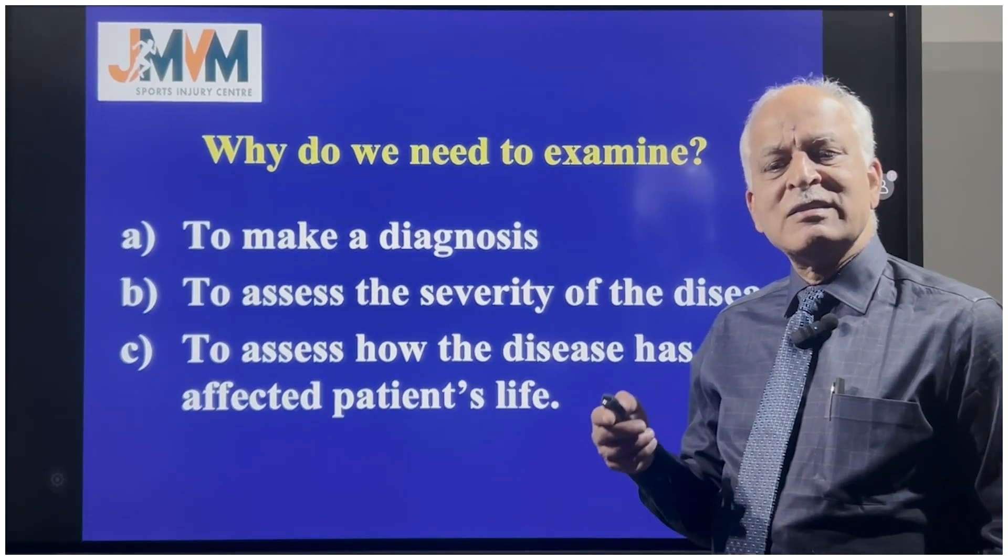The first floor is the subacromial joint — impingement and cuff tear are the main reasons for pain here. The test is the impingement test: stabilize the shoulder with one hand, internally rotate the arm, and forward flex it. If the patient does not allow movement beyond a certain limit, the impingement test is positive. This means there is a problem in the first floor and the rotator cuff needs further evaluation — you then examine all the muscles of the cuff.